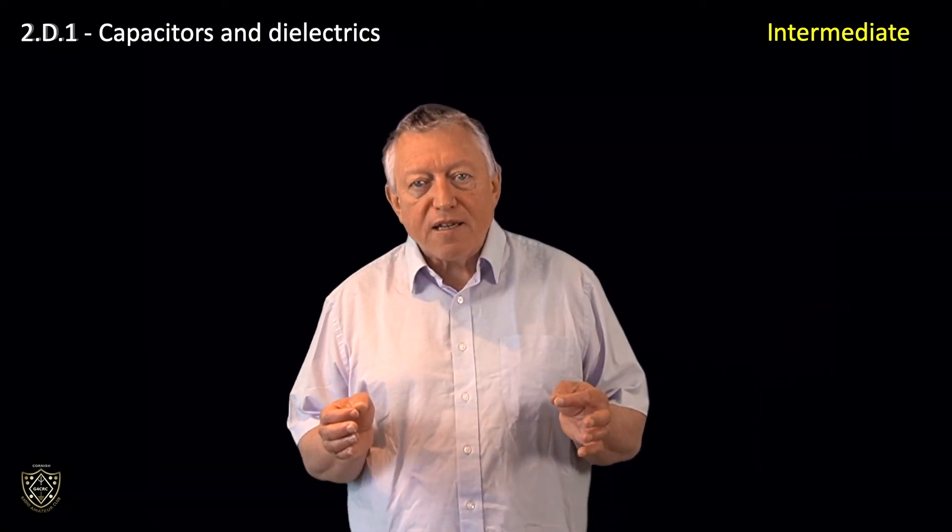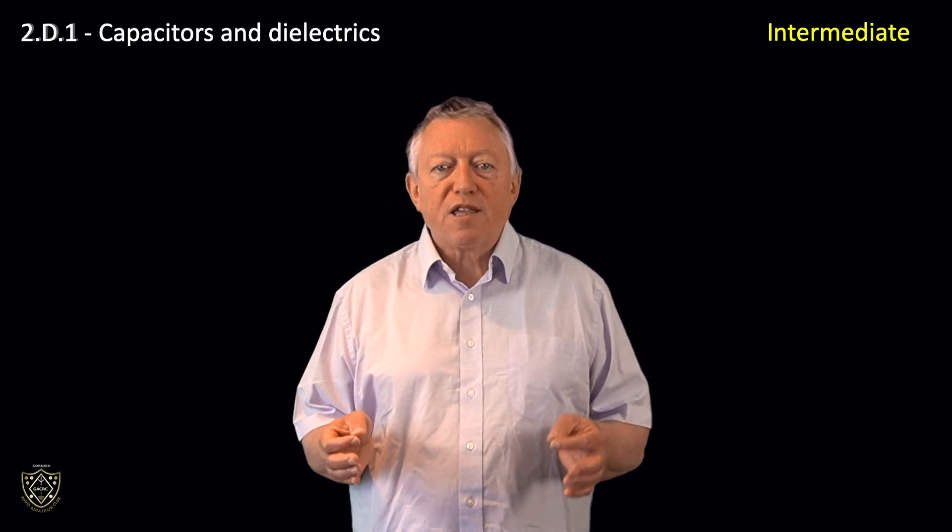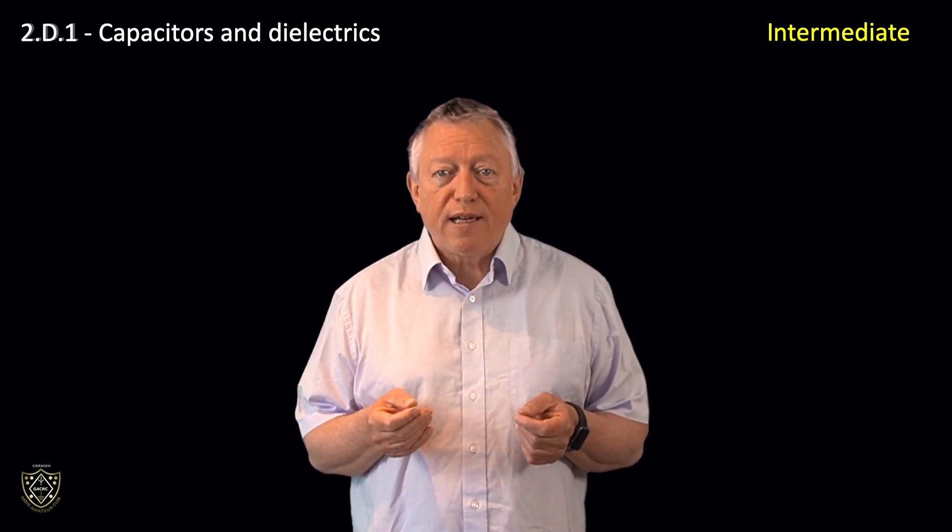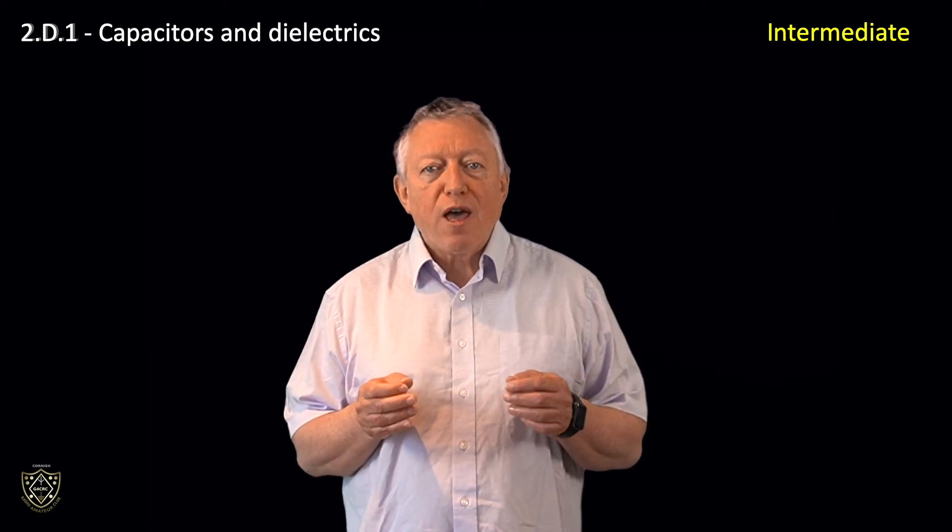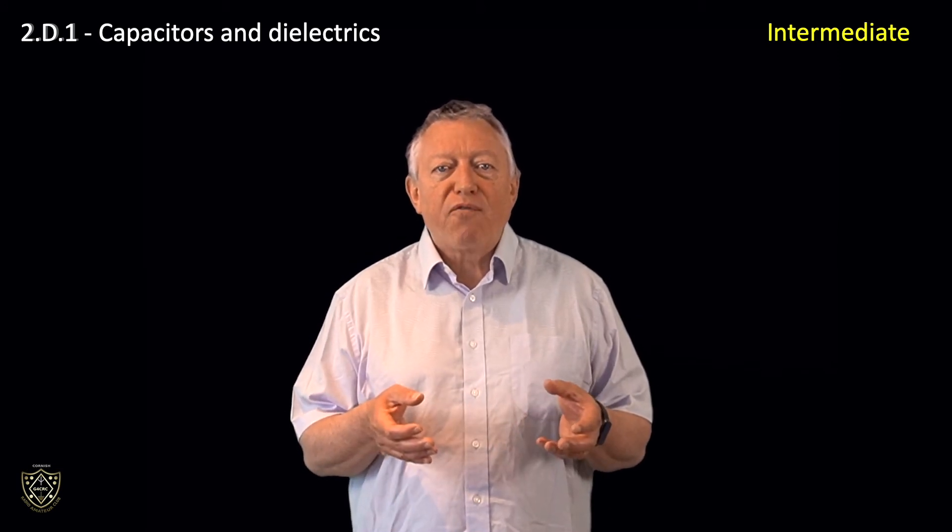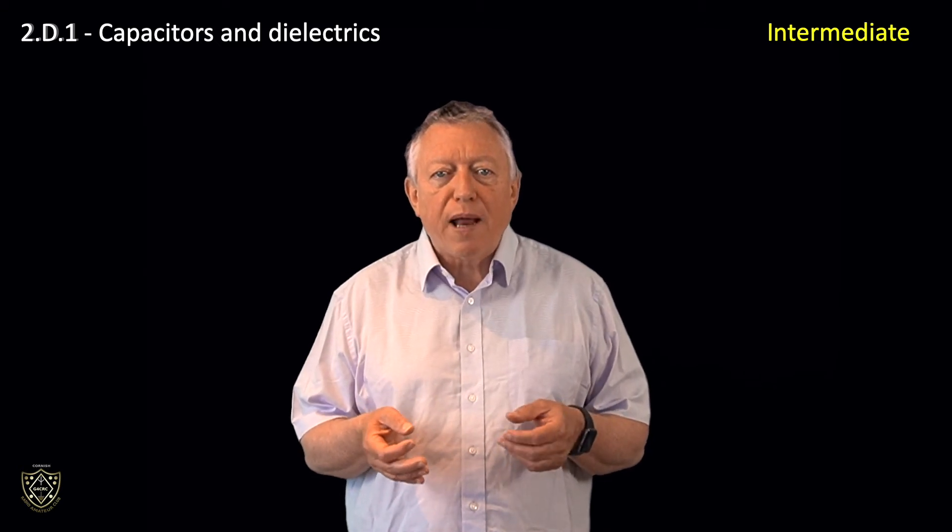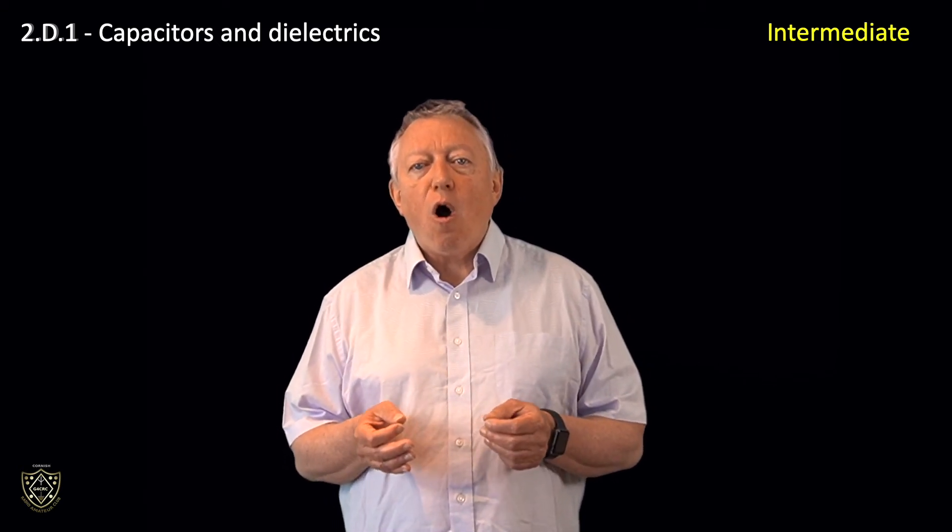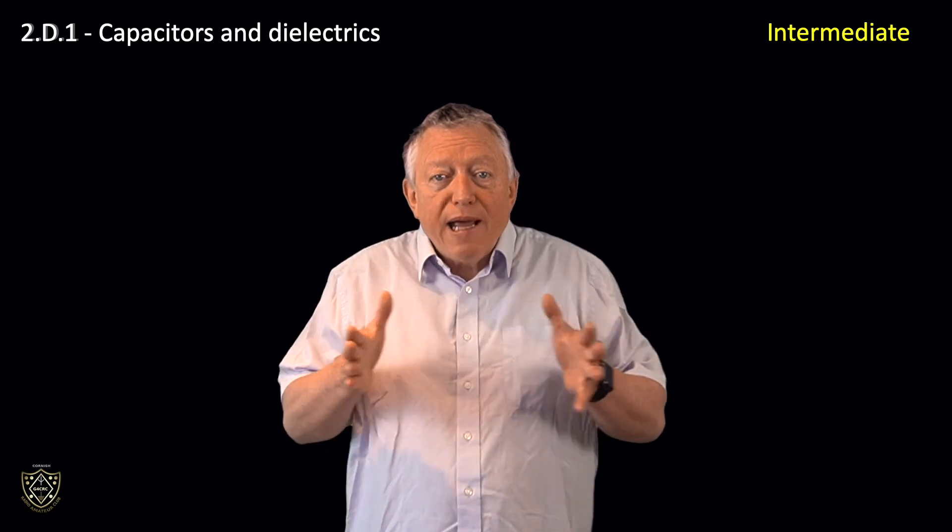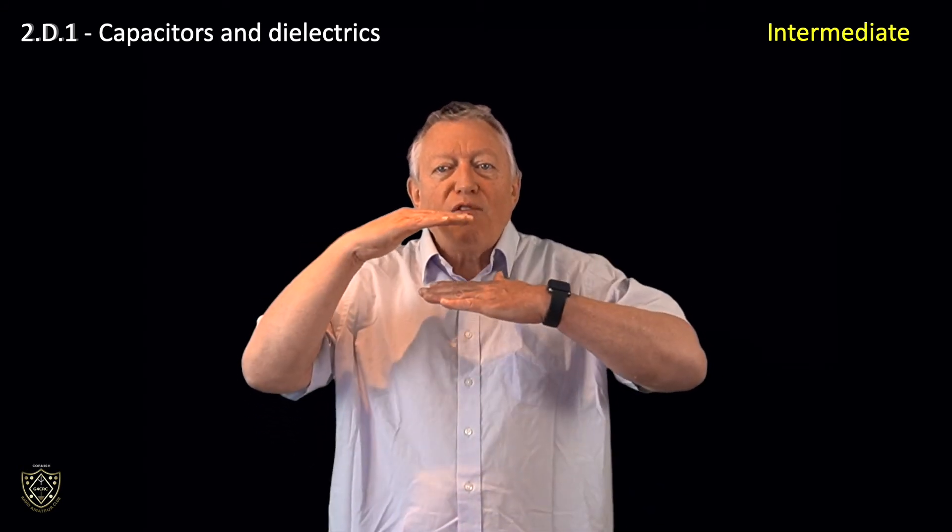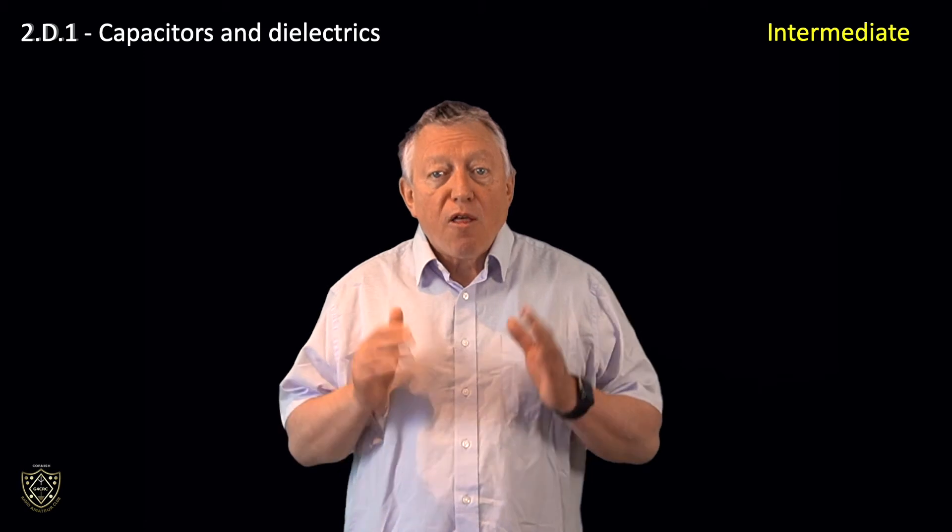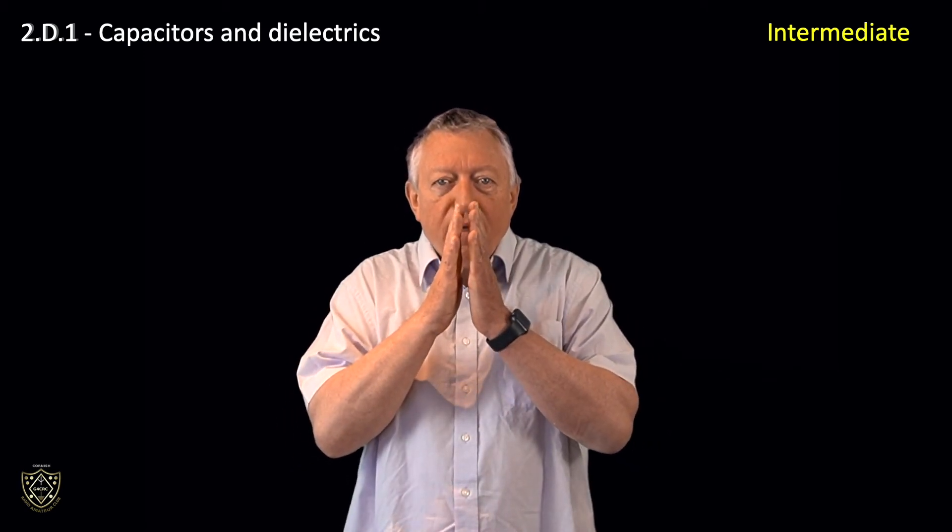So, summarizing, a capacitor stores charge and normally consists of two metal plates separated by a dielectric material, which is an insulator. The ability to store charge is capacitance, and is measured in farads, unit abbreviation capital F. The dielectric material between the plates has a multiplying effect on capacitance compared to a vacuum. Capacitance is proportional to plate area, or more correctly, the area of overlap, and is inversely proportional to the distance between the plates. The closer the plates are together without touching, the greater the capacitance.